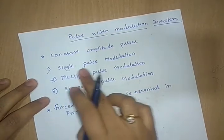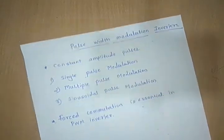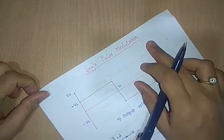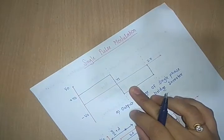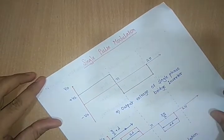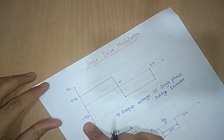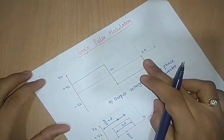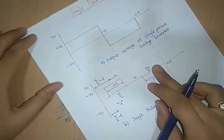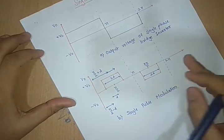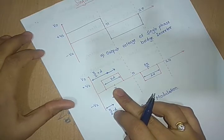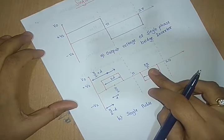Firstly we are going to see the single pulse modulation PWM technique. The figure shows the output voltage waveform from a single phase full bridge inverter. The maximum output voltage of the single phase bridge inverter is plus or minus Vs. When this waveform is modulated, the output voltage waveform consists of a pulse of width 2d located symmetrically about pi by 2, and another pulse located symmetrically about 3 pi by 2.